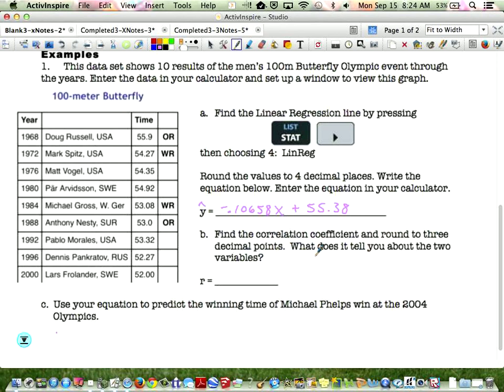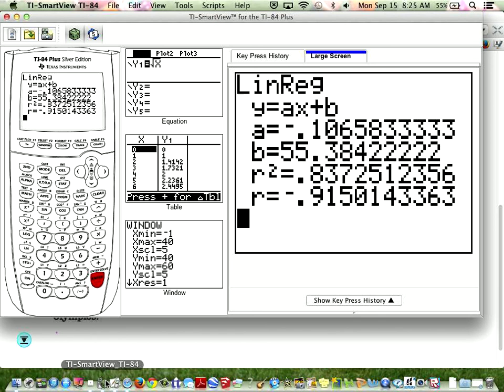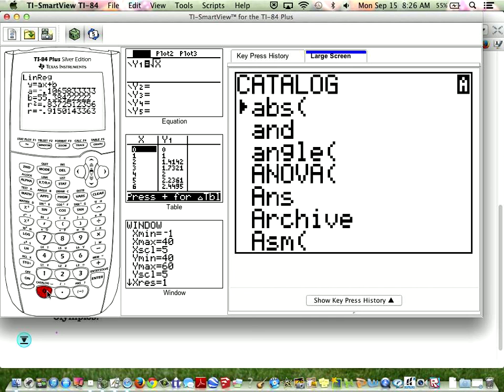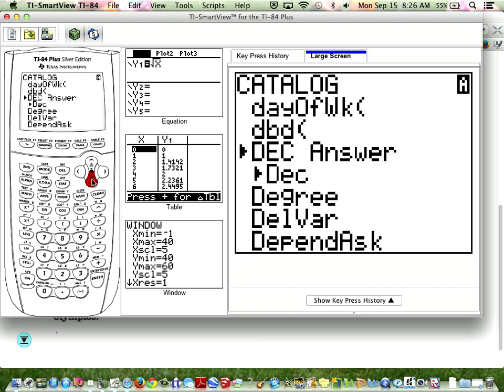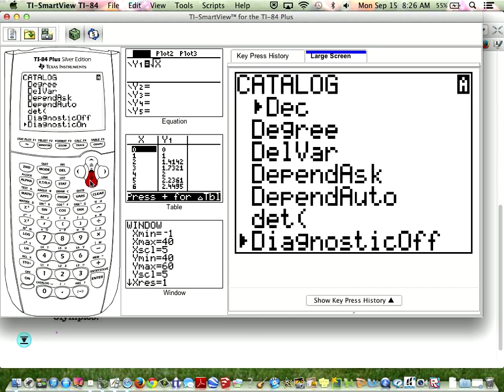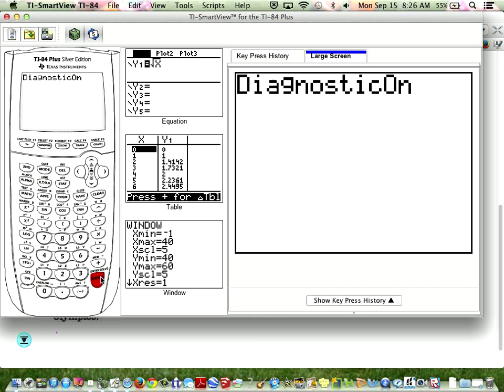To get this r value, the correlation coefficient, you want to hit second zero, which brings you to the catalog - all the different functions in your calculator. You can start scrolling down until you get to the d's, or hit x to the negative one and it will take you to the d's. You're looking for diagnostic on. Hit enter and now your diagnostics are turned on. Now when you do stat, calculate, number four, your r value pops up for you. My r value is -0.915.